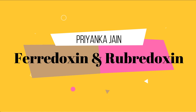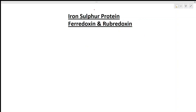In our last lectures of bio and organic chemistry, we have seen several topics like hemoglobin, hemocyanin, and hemerythrin. Some topics are remaining, so now we will go through these topics. First of all, we will see the very important topic of iron-sulfur proteins — that is ferredoxin and rubredoxin.